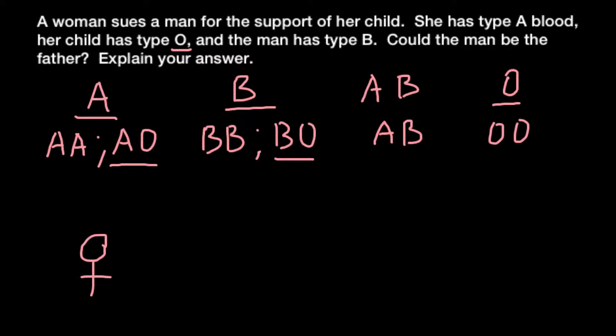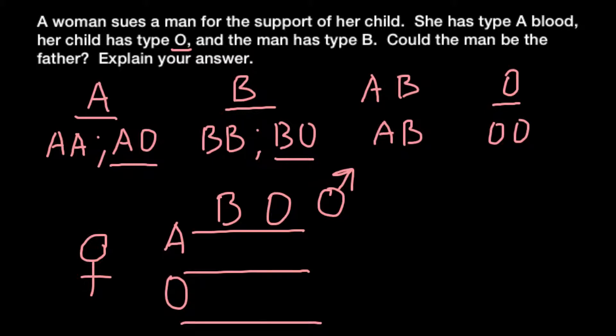And male would be on this side, and genotype would be B, O. When we cross these two people, or these two genotypes, we would have A, B here, B, O here, A, O here, and O, O here.